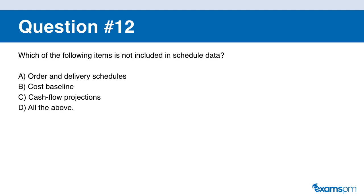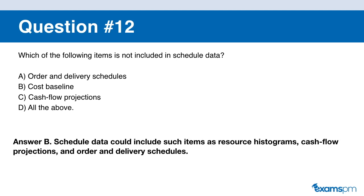Number twelve. Which of the following items is NOT included in the schedule data? A: order and delivery schedules. B: cost baseline. C: cash flow projections. D: all of the above. If you said B, you are correct. Schedule data can include resource histograms, cash flow projections, and orders and delivery schedules — but not the cost baseline.